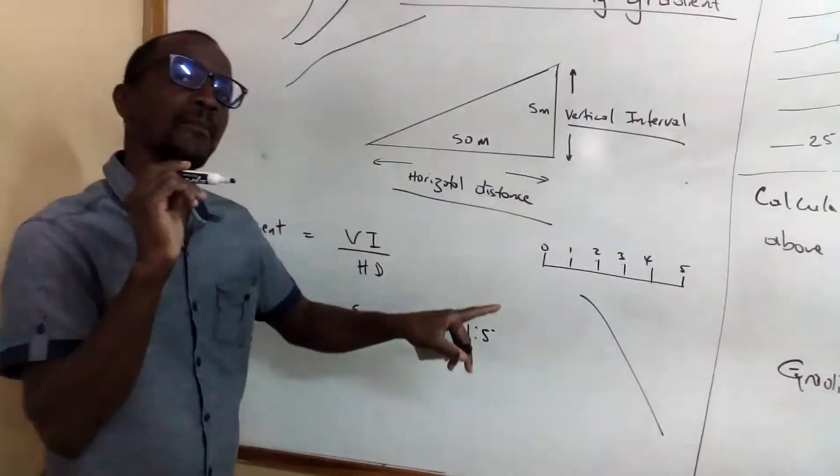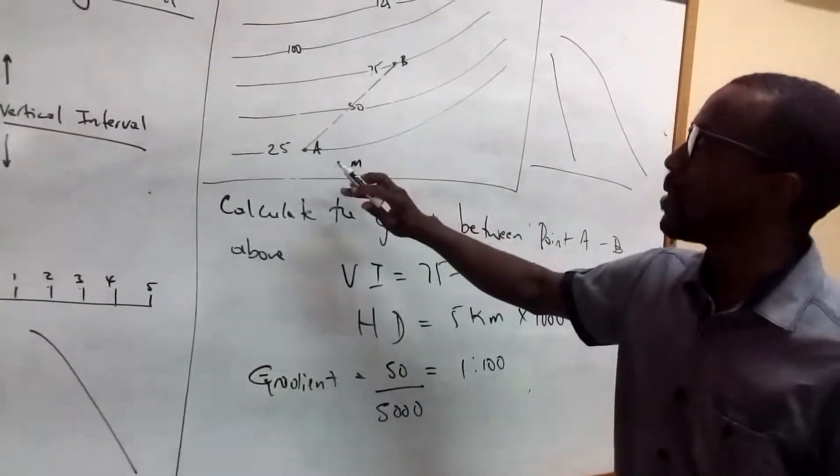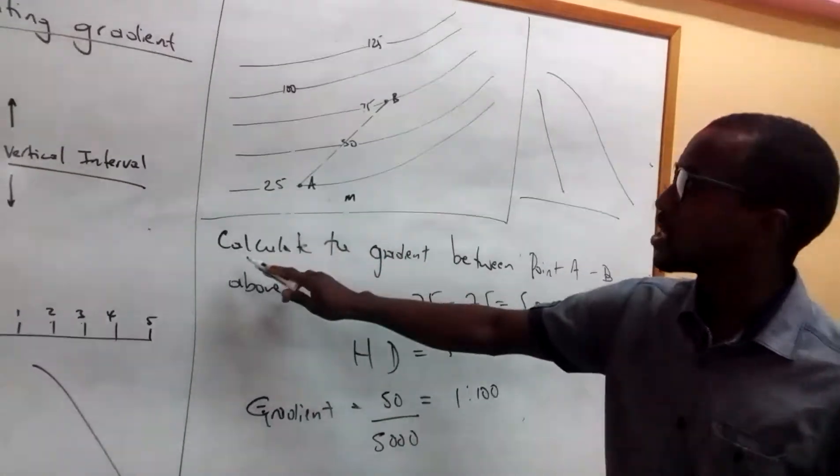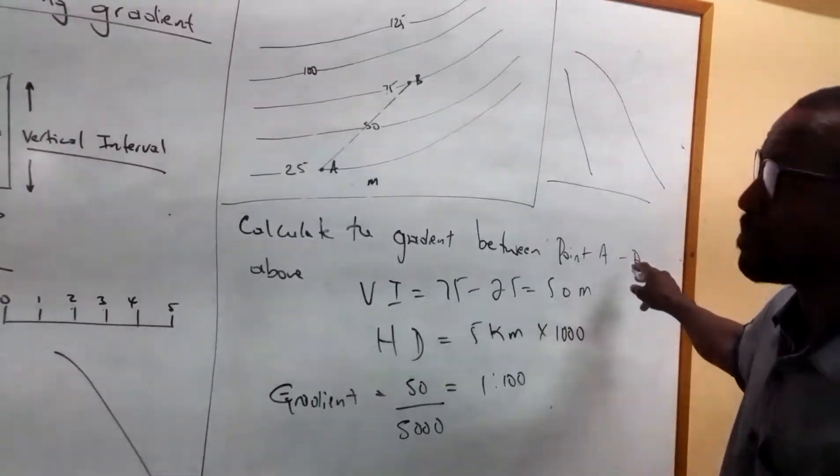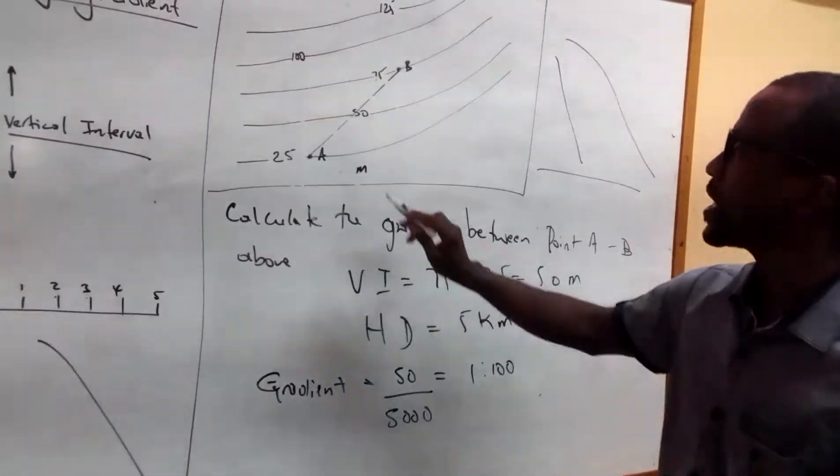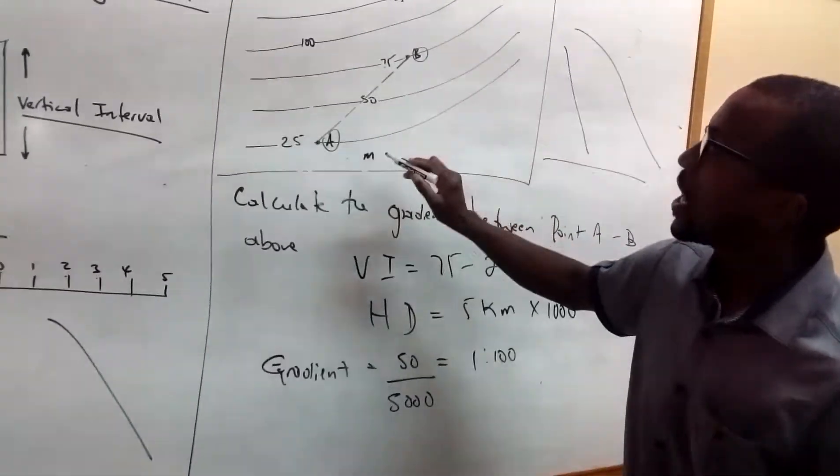So let's look at this example over on this side. So here you have a diagram and it asks the question, calculate the gradient between point A and point B above. So this is point A right here and this is point B.